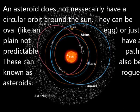An asteroid does not necessarily have to be in a circular orbit around the sun. They can be oval, like an egg, or just plain not have a predictable path. These can also be known as rogue asteroids.